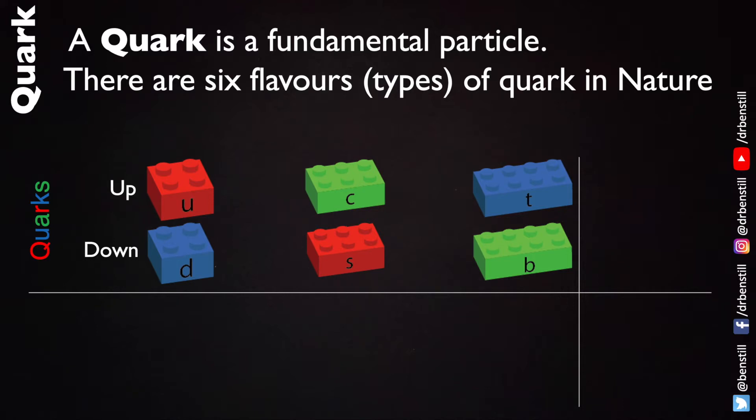Then there is the heavier version of the up quark which is called the charm quark and a heavier version of the down quark called the strange quark. These are the second generations of quark. They have exactly the same properties as the up and down quarks aside from the fact that they have a greater mass. They have exactly the same way of interacting with the strong interaction and exactly the same electric charge.